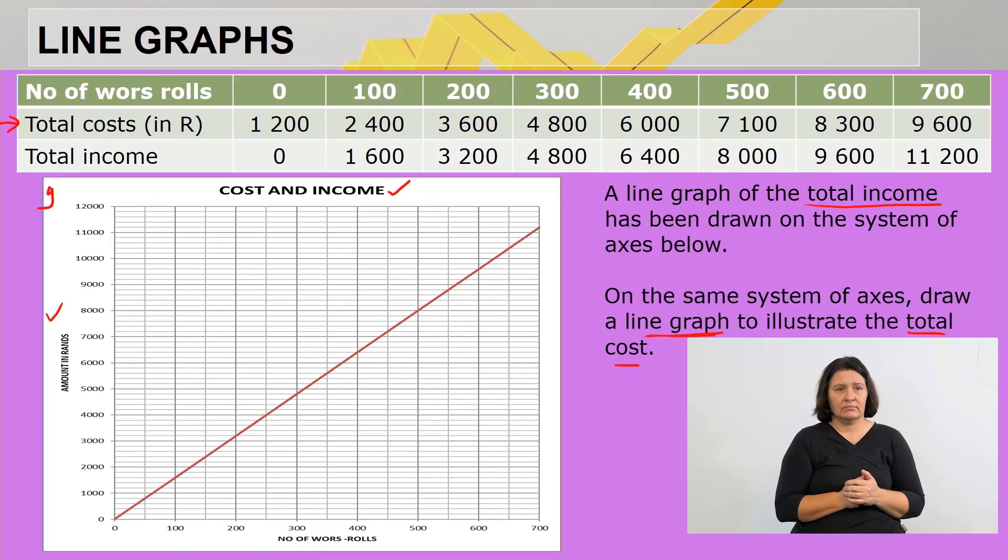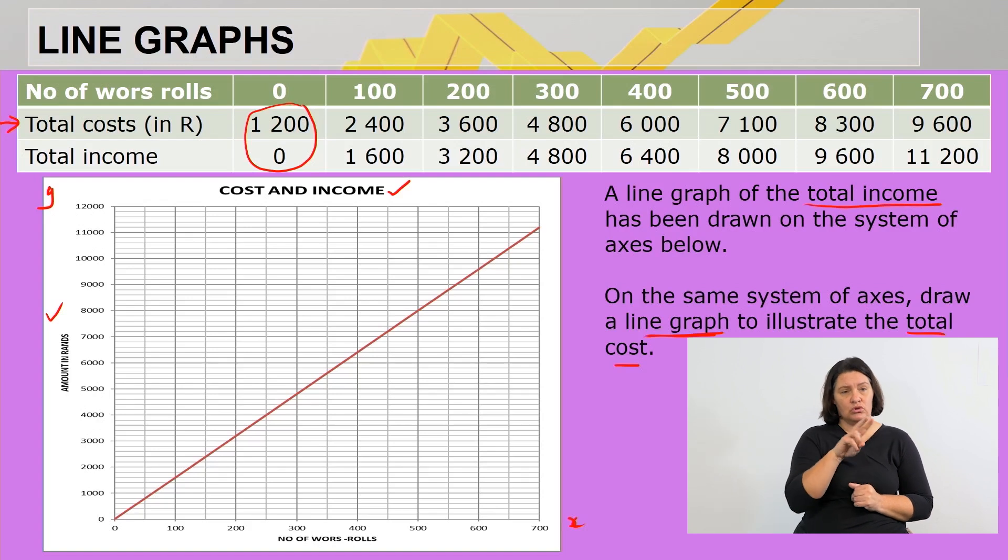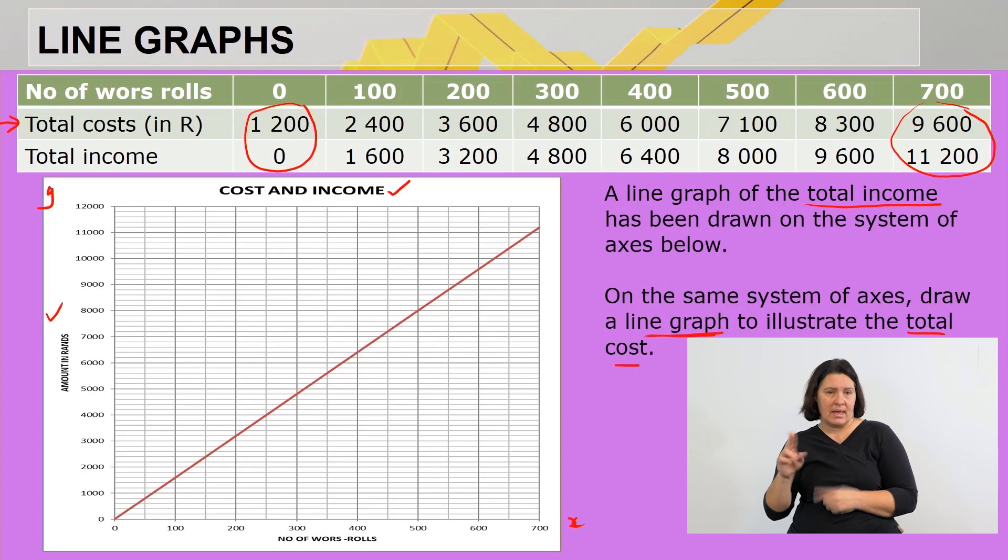Now we're basically going to plot according to the number pairs. What are number pairs? This is a number pair: 1200 and zero, for example, or 9600 and 11200. That is called an ordered number pair.